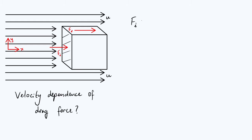So let's come up with expressions for Fi, the inertial force, starting with the inertial contribution. Fi comes from Newton's second law, which says force is rate of change of momentum. So I'm going to say the inertial force is dPx/dt, where the subscript x emphasizes it's due to particles moving and stopping in the x direction. From here on I'll use squiggly lines to show we're no longer being exact. The fluid particles are coming in, hitting the surface, having their velocity reduced from u down to zero over some infinitesimally short timescale dt.